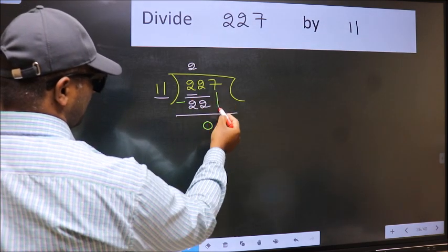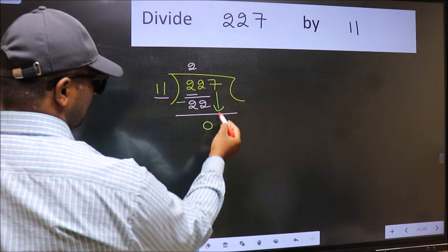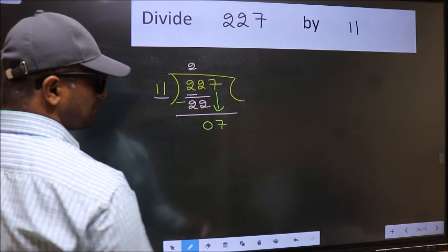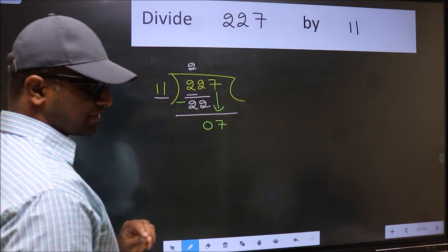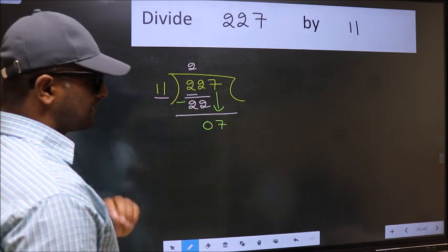After this, bring down the beside number. 7 down. After this step, the mistake happens. And the mistake is this.